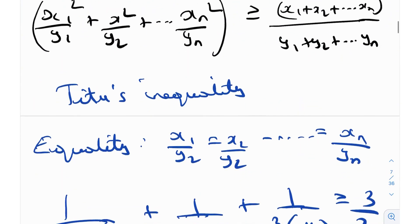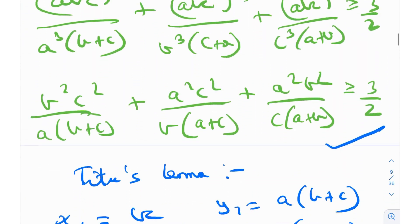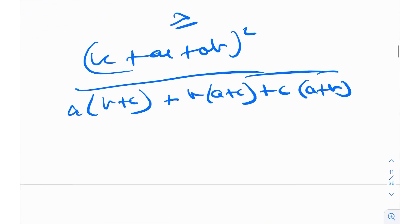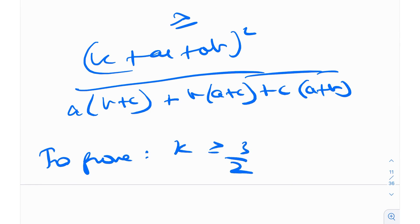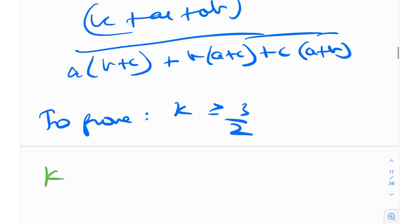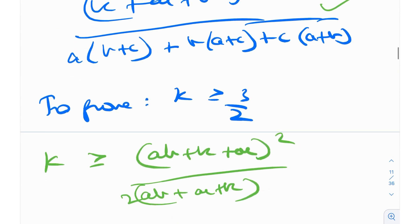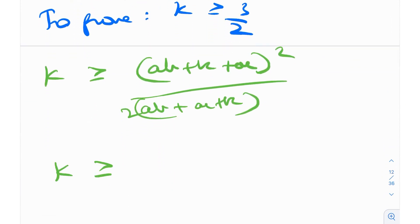Let me call the left-hand side k. We need to prove k ≥ 3/2. So k ≥ (ab + bc + ca)² / [2(ab + ac + bc)], which simplifies to k ≥ (ab + bc + ca) / 2.